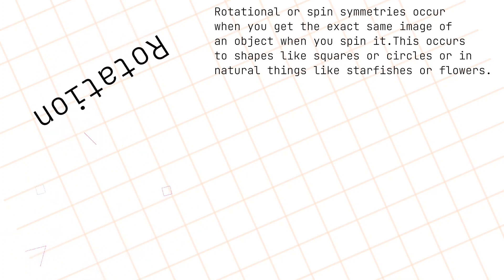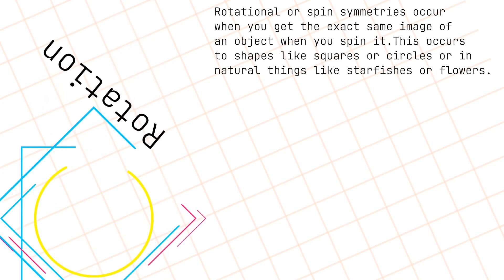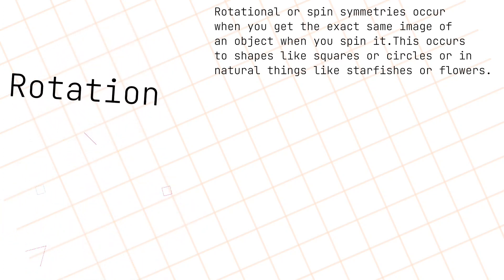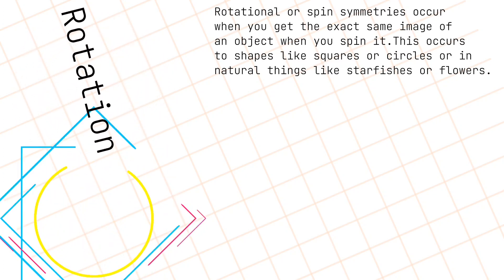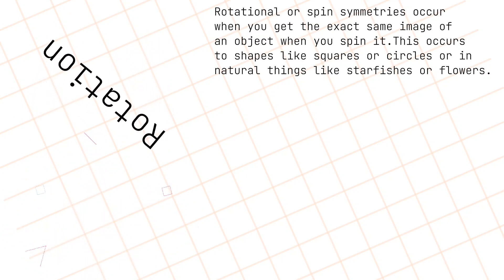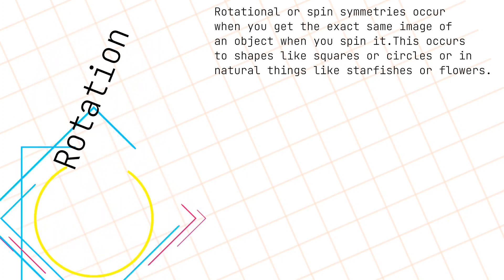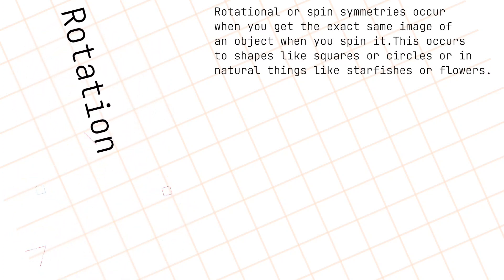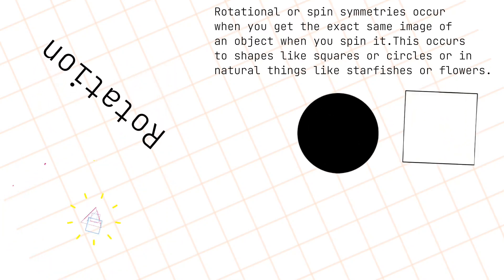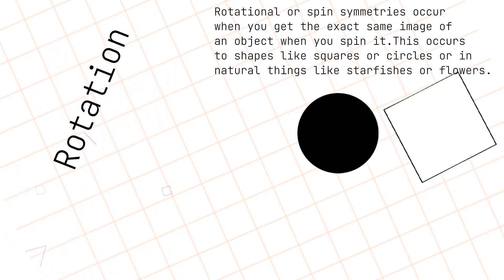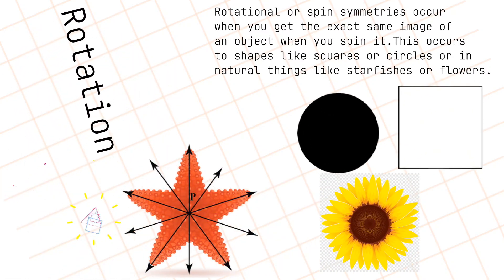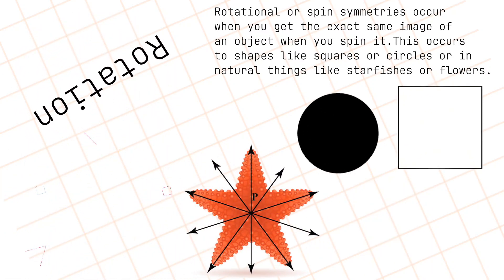Rotational, or spin symmetries occur when you get the exact same image of an object when you spin it. This occurs in shapes like squares or circles, or in natural things like starfishes or flowers.